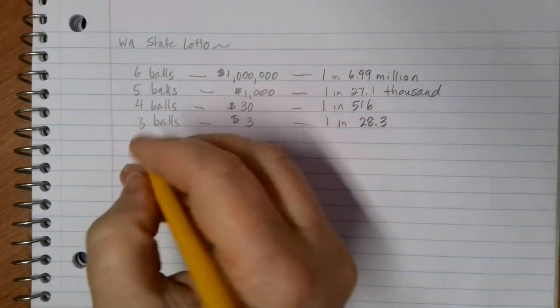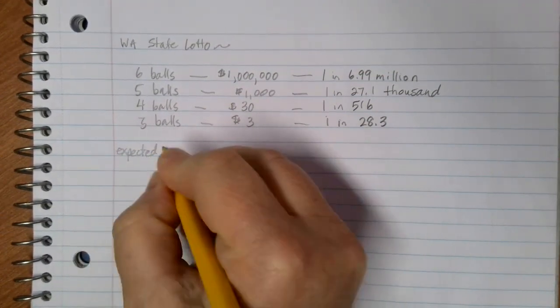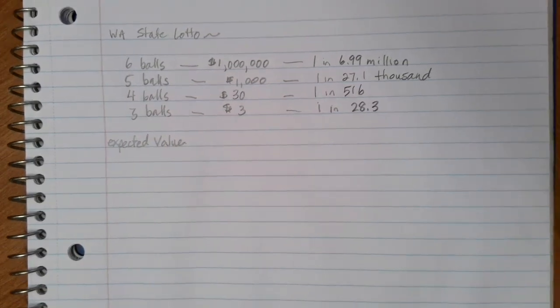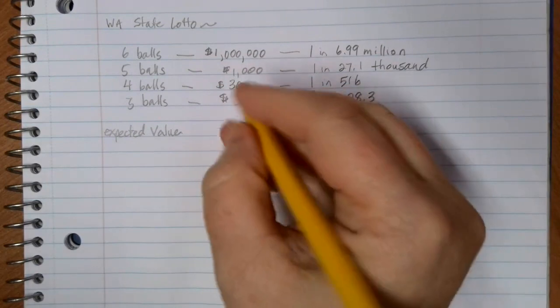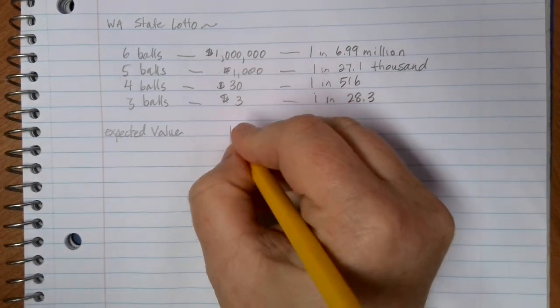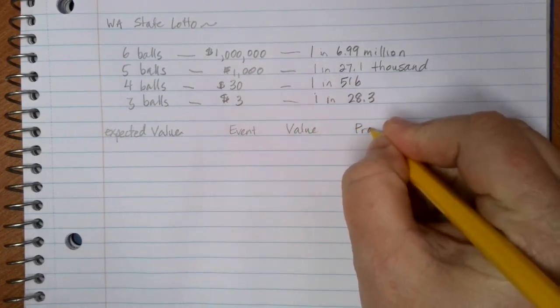So let's figure out what the expected value in the lotto is going to be. To start out with, the first thing you need to do is to create a probability distribution table. So we need to know what our event is, what the value of that event is, and what the probability of that event is.